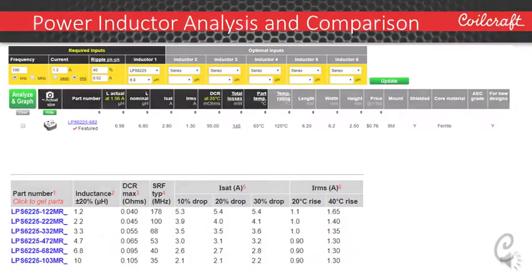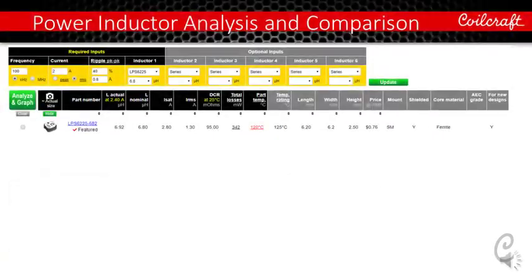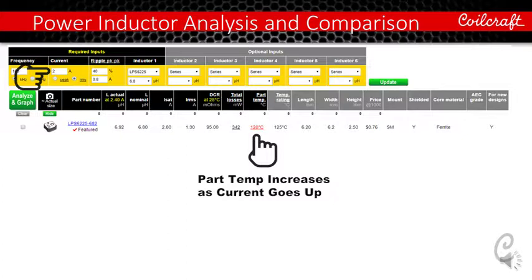For example, if your operating condition requires a DC current at 1.3 amps, which equals the IRMS spec on the datasheet, we can see that part temperature in the tool is showing 65 degrees C, which is 40 C temp rise at 25 degrees C ambient temperature. So this matches the temp rise spec on the datasheet. When we increase the current to 2 amps, the part temp will also be increased. The number turns red when it's getting close to the max temperature rating. So this tool is showing the part temperature based on your actual operating condition. This is one of the analysis that goes beyond our datasheet.